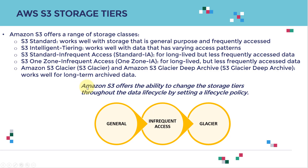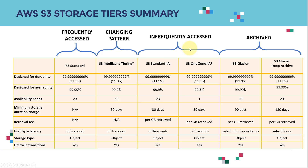The archival charge is obviously much less compared to S3 Standard. Amazon S3 also offers the ability to change storage tiers throughout the data lifecycle by setting a lifecycle policy. For example, you can set a policy on a bucket to start as Standard, then transition to Infrequent Access after a month, and then to Glacier after a couple of months.